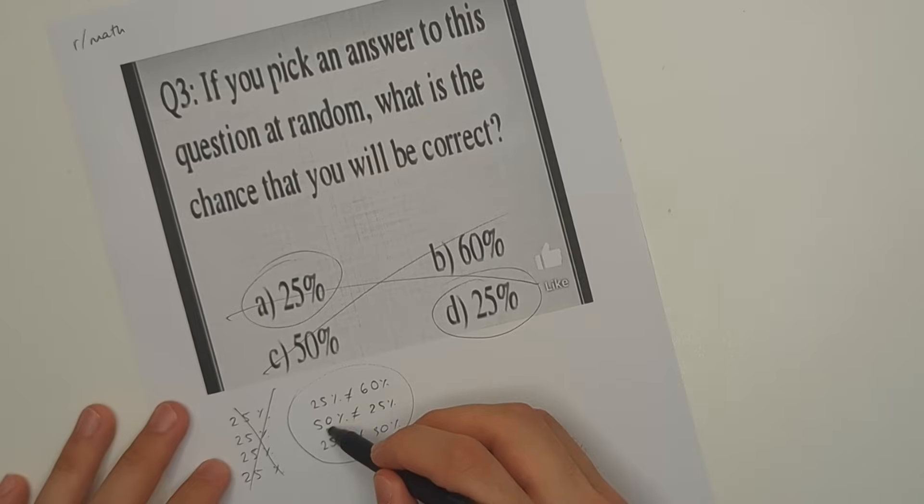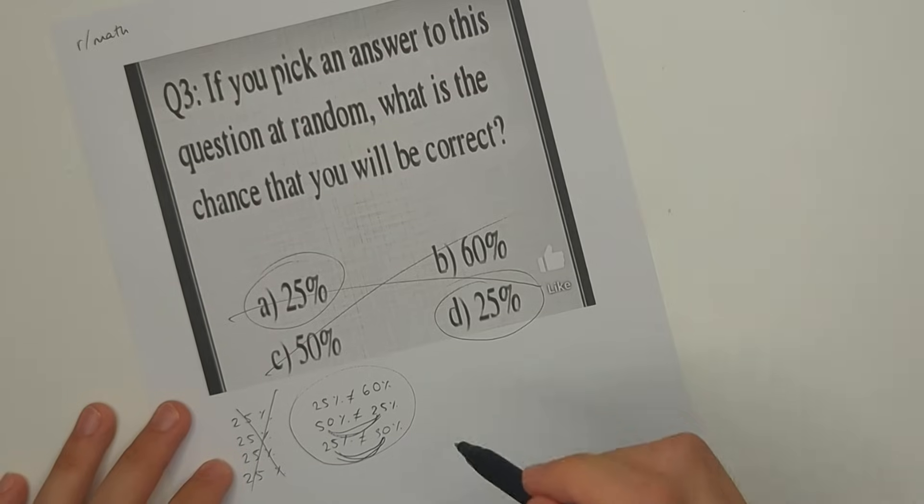This is why you get this looping around of 50 to 25, 25 to 50, 50 to 25 and it just keeps looping around. None of them are the same so none of them are the answer.